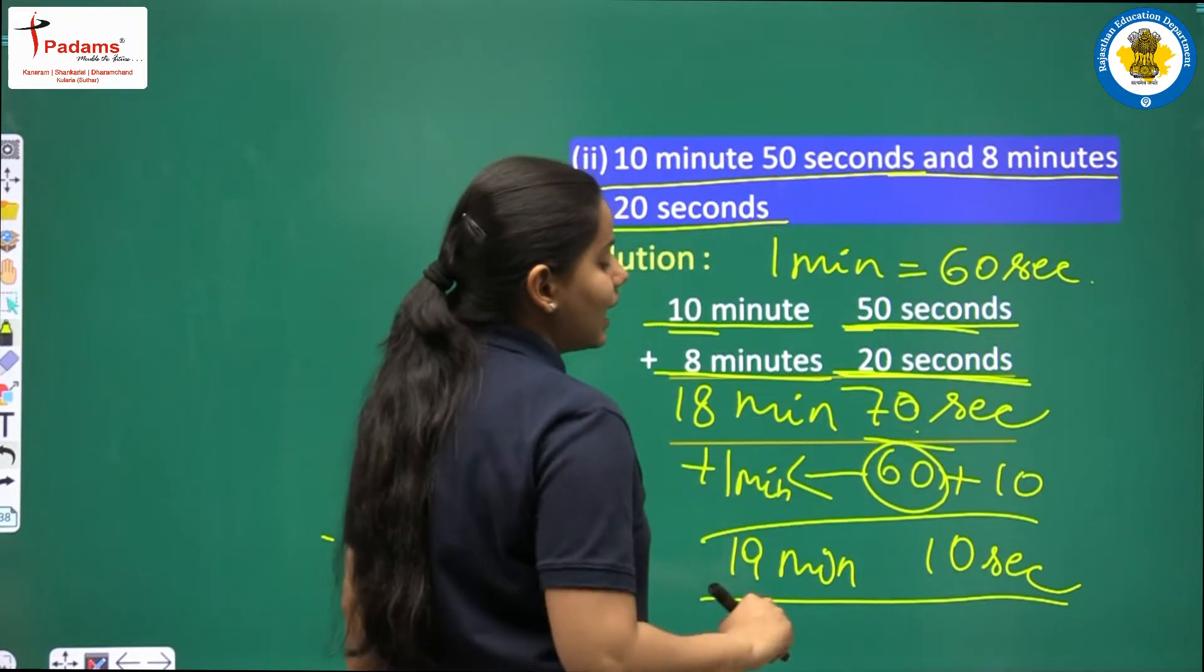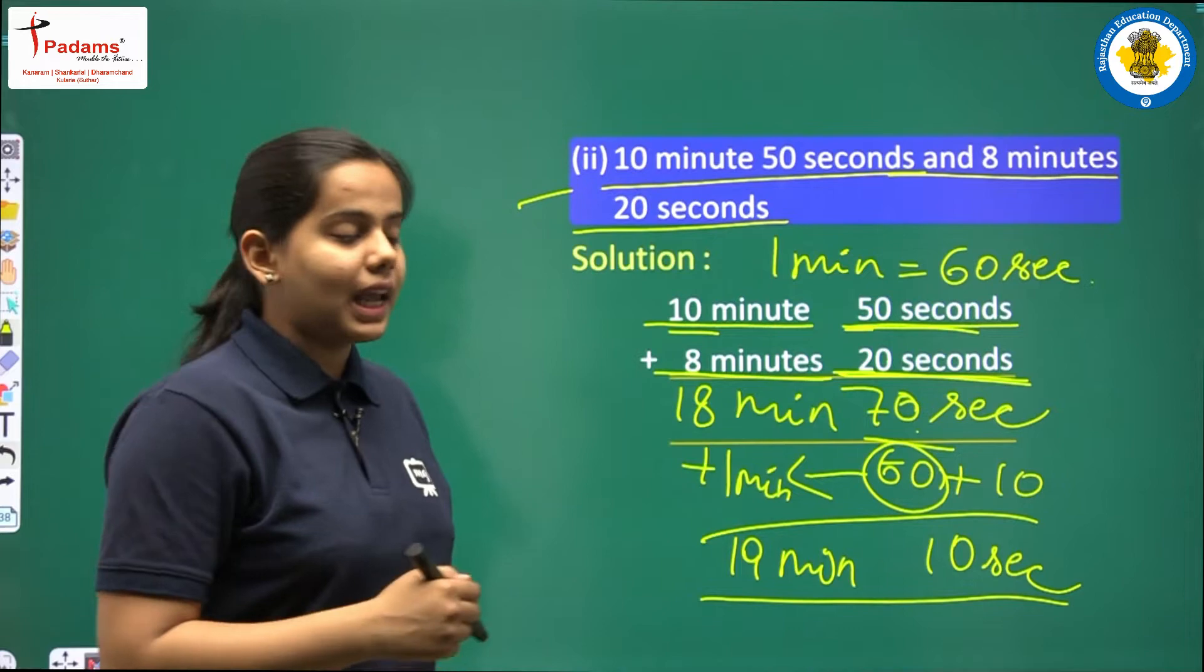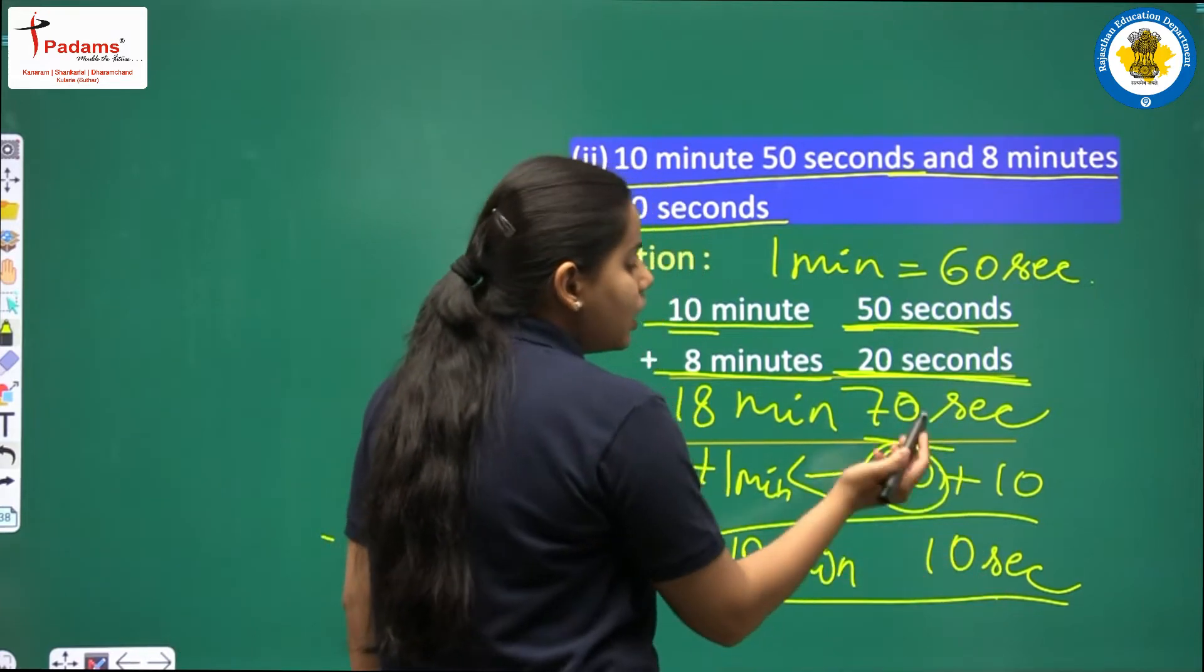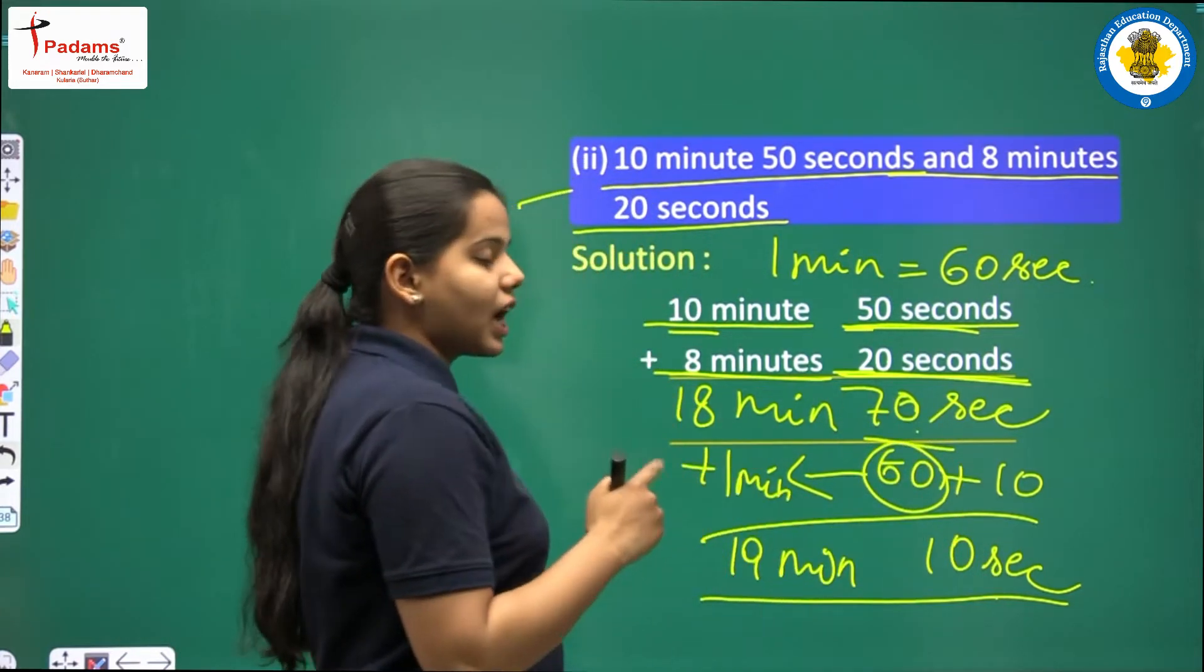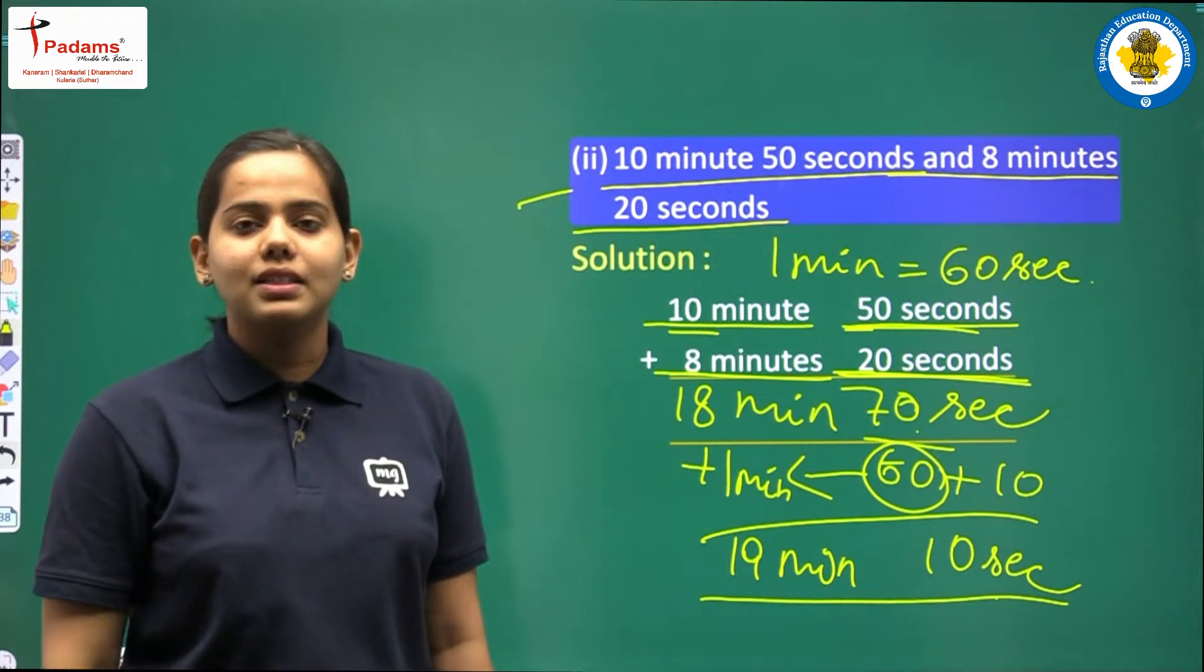Whenever it is more than 60, you subtract 60. Whatever difference you get will remain in the same place. And 60 will go to the next place and convert to 1 and add as plus 1. Now let us practice it more. Let us solve the third part.